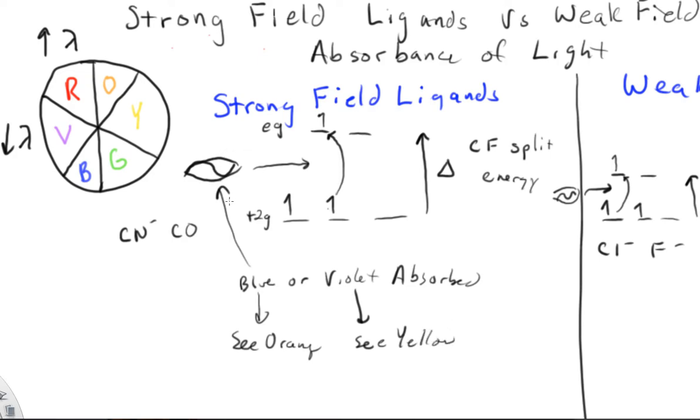But the point is that if we were sending white light through, it would be the blue or the violet that's absorbed, because it has to have a greater amount of energy to jump up than this electron influenced by a weak-field ligand. So this jump is greater. It requires a photon of greater energy. So it would absorb blue or violet, and you would see orange or yellow.